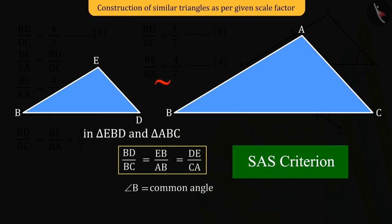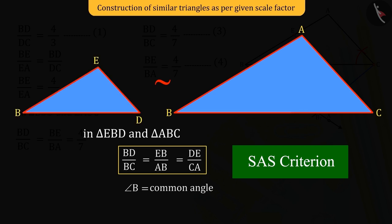Hence, from SAS criteria of similarity of triangles, both the triangles triangle ABC and triangle EBD will be similar.